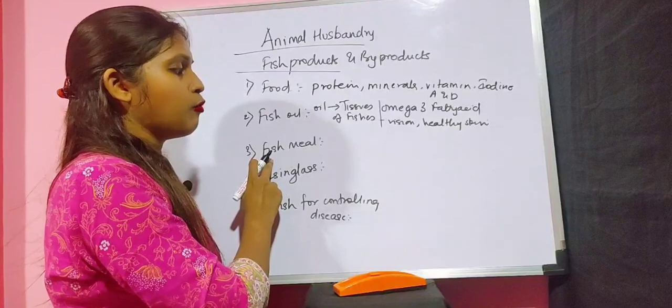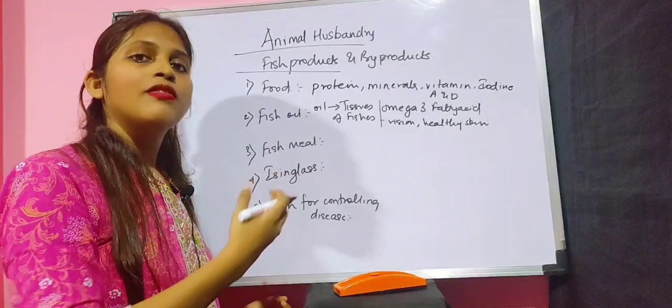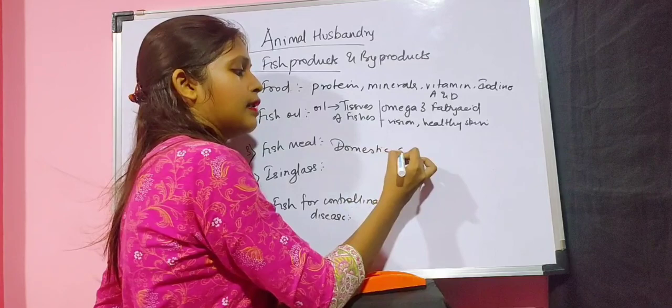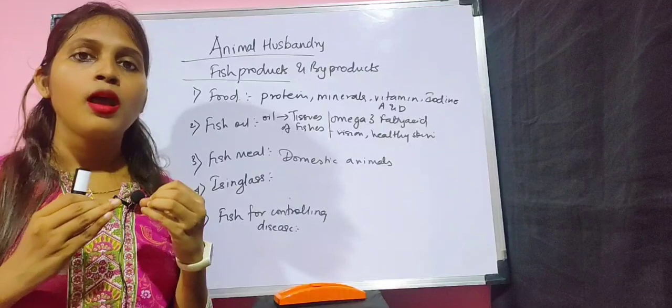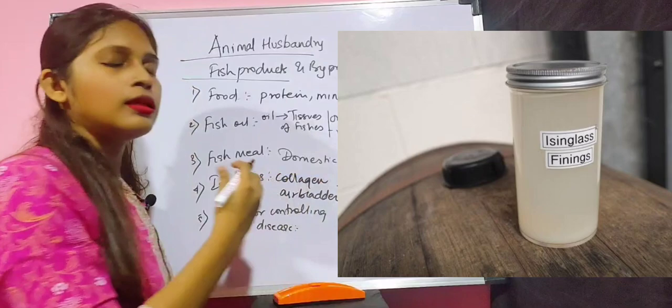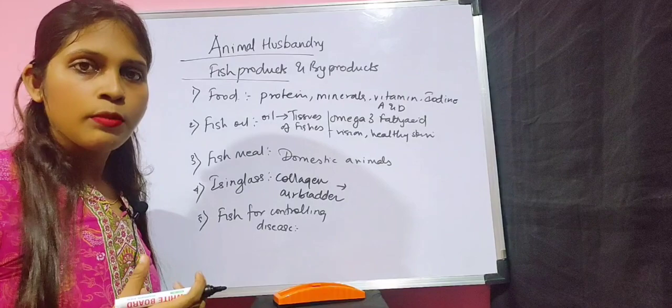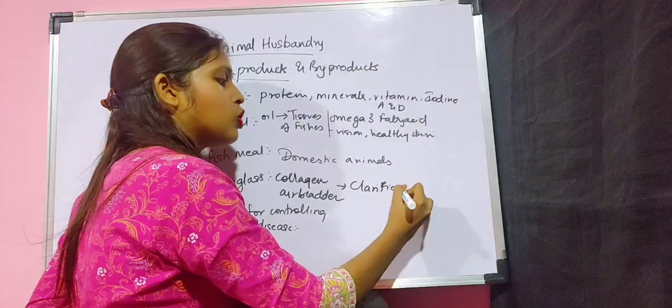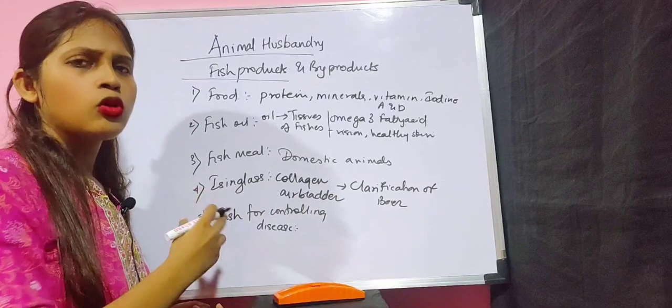The third byproduct is fish meal, which is the waste material of fishes given as food or fodder to domestic animals and cattle. Isinglass is a high-fiber collagen obtained from the air bladder of fishes. It is used in the brewing industry for clarification of beer, and also has uses in cosmetics.